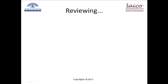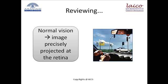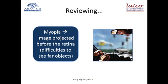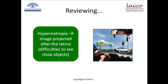Let's review what we saw today. First, we learned that normal vision occurs when the image is precisely projected at the retina, creating the crisp image most of us are used to. However, if the image is projected before the retina, we have difficulties seeing far objects — this is called myopia. On the other hand, if the image is projected after the retina, the person has difficulties seeing close objects. This error is called hypometropia.